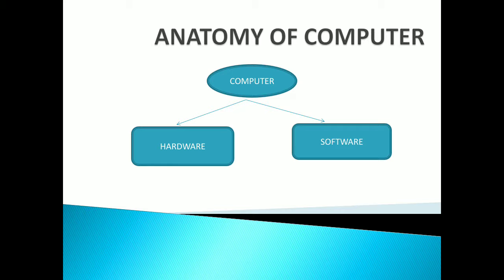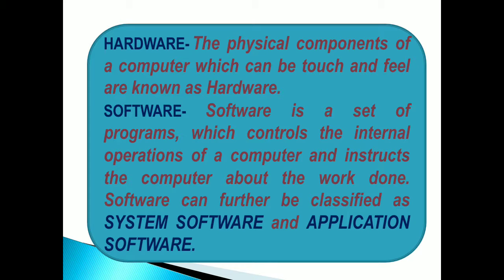Computers have two main parts: Hardware and Software. These are very common terms generally used in Computer Science. Hardwares are the physical components of a computer which we can touch and feel. Software is a set of programs which controls the internal operations of a computer.